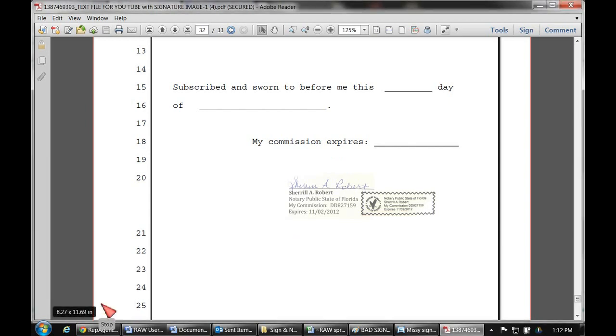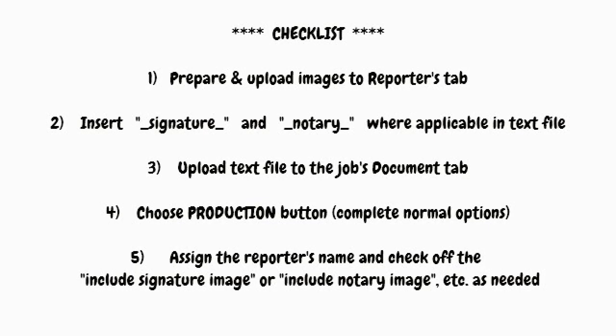A quick checklist: prepare and upload your images to the Reporters tab. Be sure to insert the signature and notary placeholders where applicable in your text file, then upload that text file to your job's Documents tab. Go ahead and choose Production, complete your normal options, go down to the bottom right and assign your reporter's name, and check off the include signature or notary — digital, whatever image that you need.